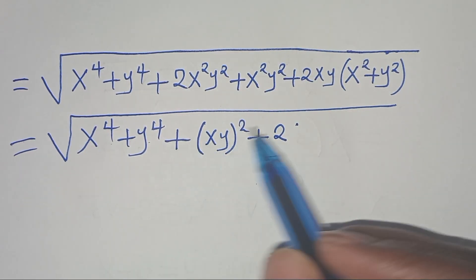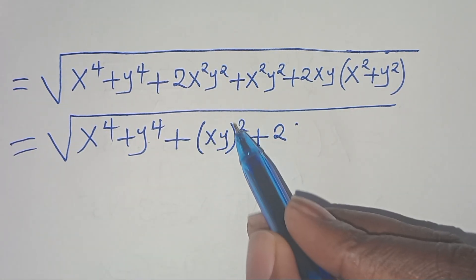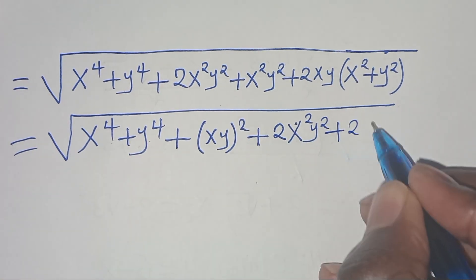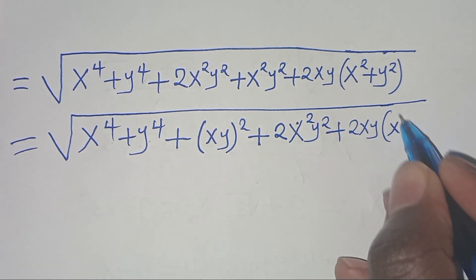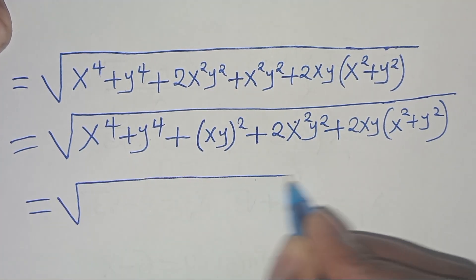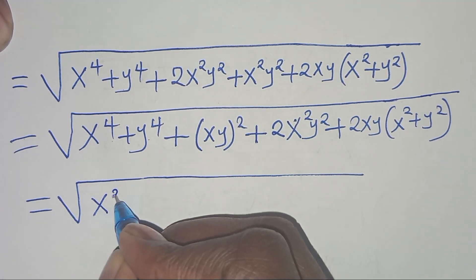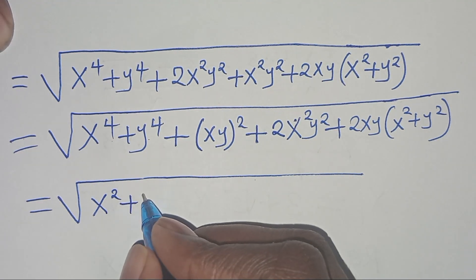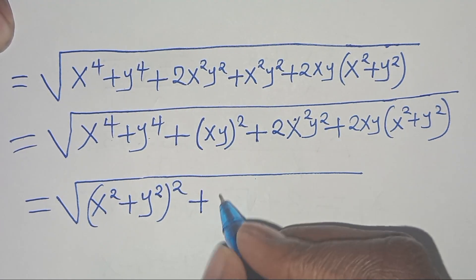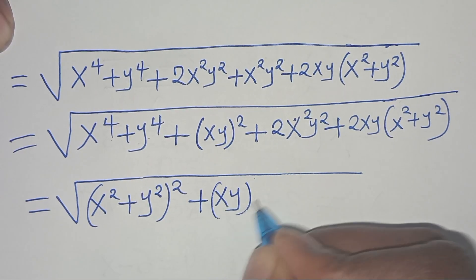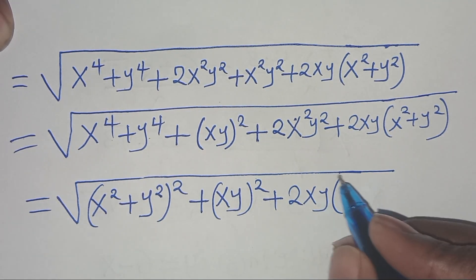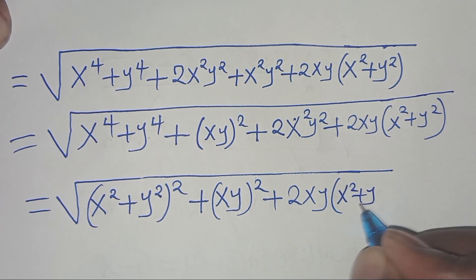We can express x to power 4 plus y to power 4 plus 2x squared y squared as x squared plus y squared, all squared. Then plus xy squared, then plus 2xy into the parentheses x squared plus y squared. The next step: we can express x to power 4 as x to power 2 squared, plus y to power 4 as y to power 2 squared, then we square this, then plus xy squared, then plus 2xy into the parentheses x squared plus y squared.